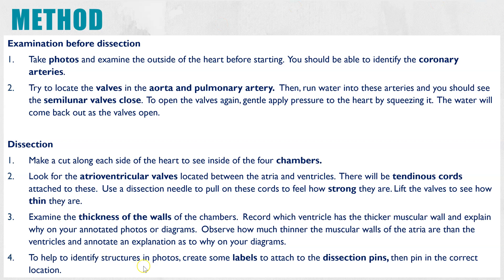Lastly, you may be given dissection pins and labels so you can put pins into each of the four chambers and add a label. You might be able to do the same with the valves. If you don't have those, take photos and add label lines afterwards so you can label the structures that way.